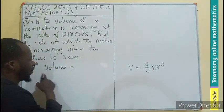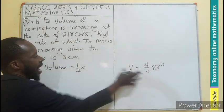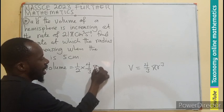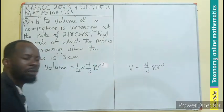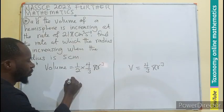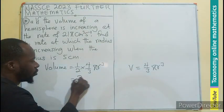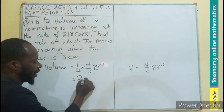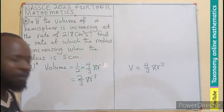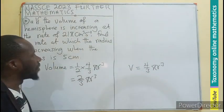then it means that hemisphere volume is going to be 1/2 times 4/3 πr³. And I believe 4 and 2 have something in common. So we can reduce to have 2/3 πr³. So this is the volume of a hemisphere.